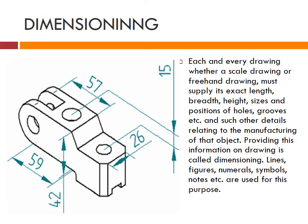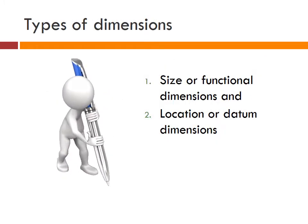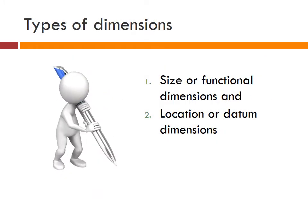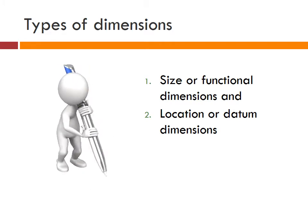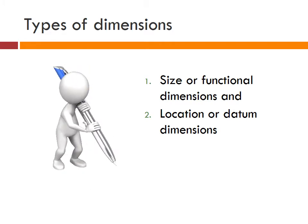Now comes dimensioning. Every drawing, whether a scale drawing or freehand drawing, must provide its length, breadth, height, size, etc. Providing this information on a drawing is called dimension. There are two types of dimensions — size or functional dimension, and location or datum dimension.